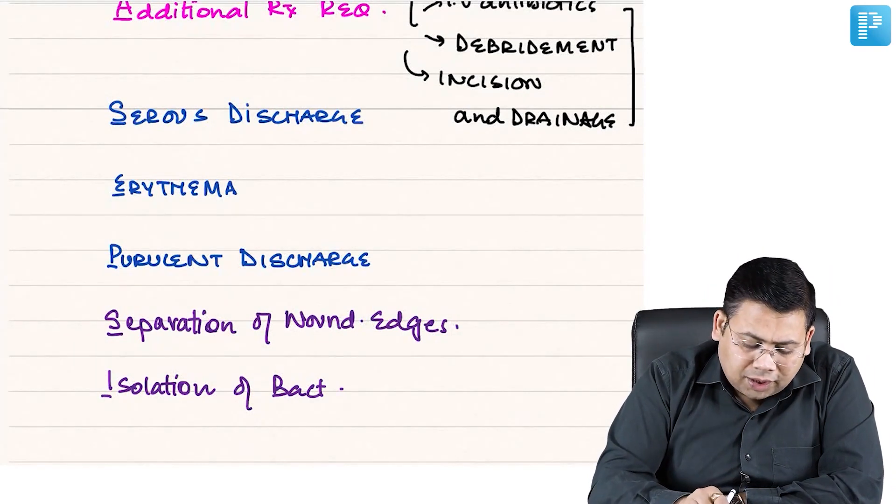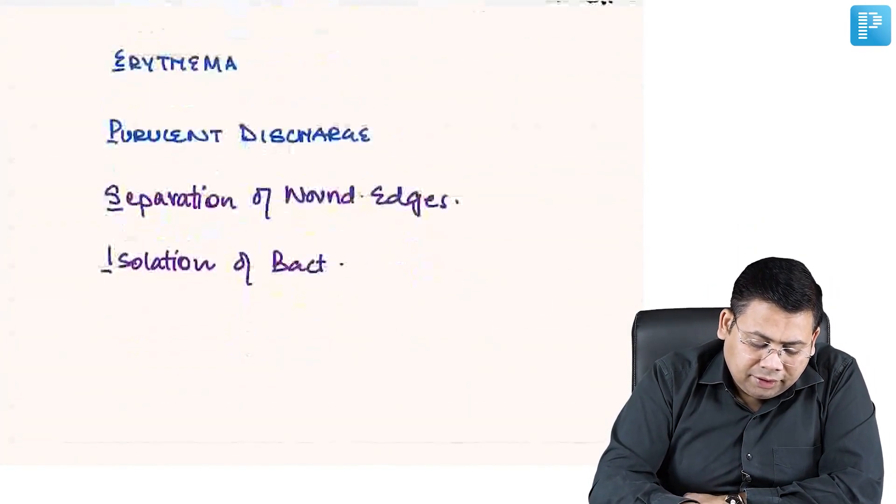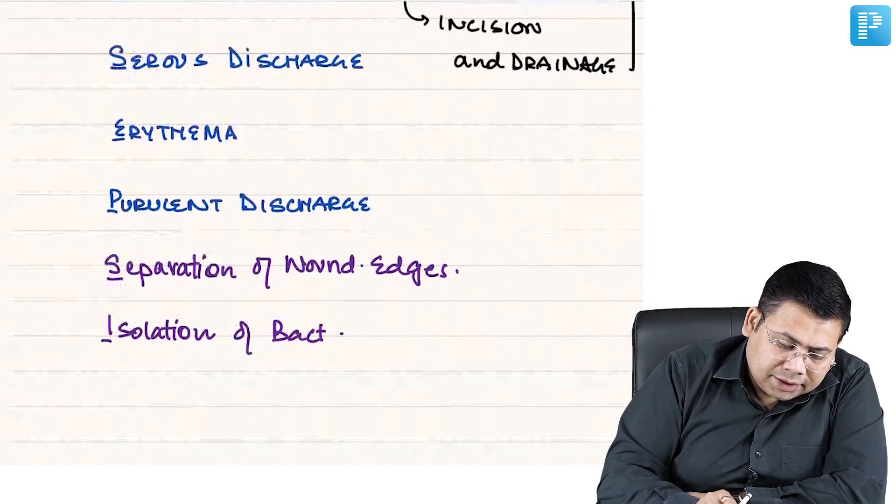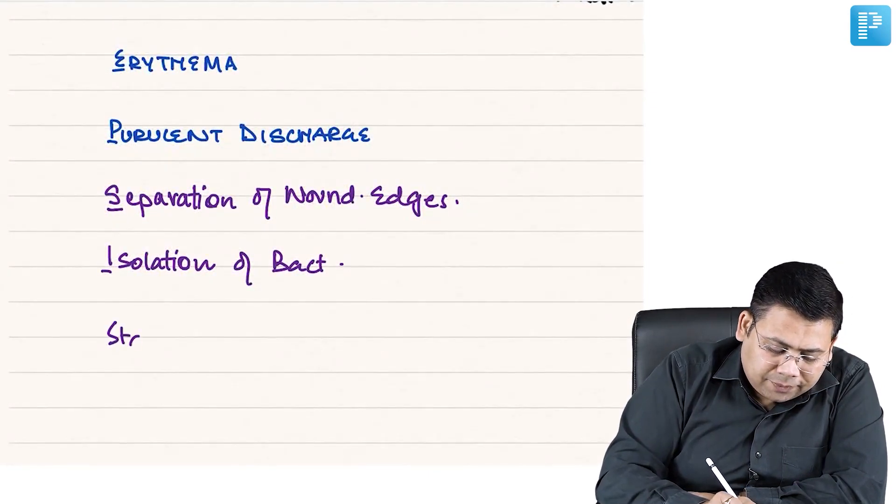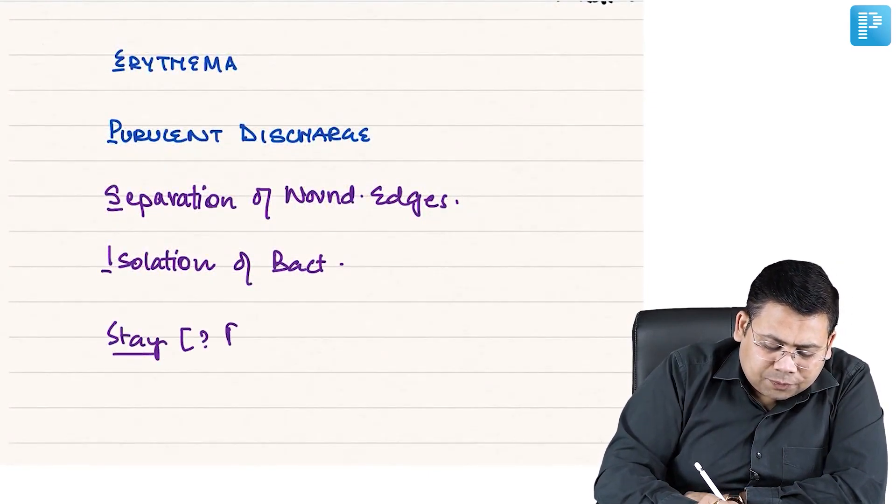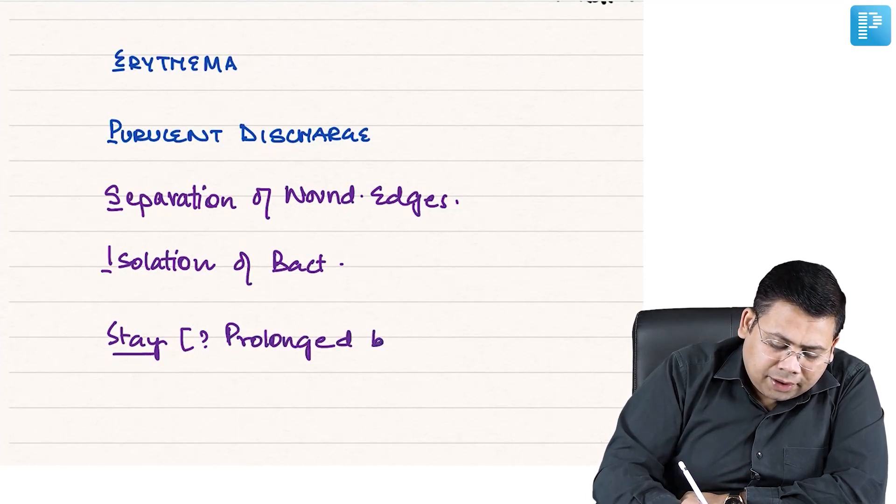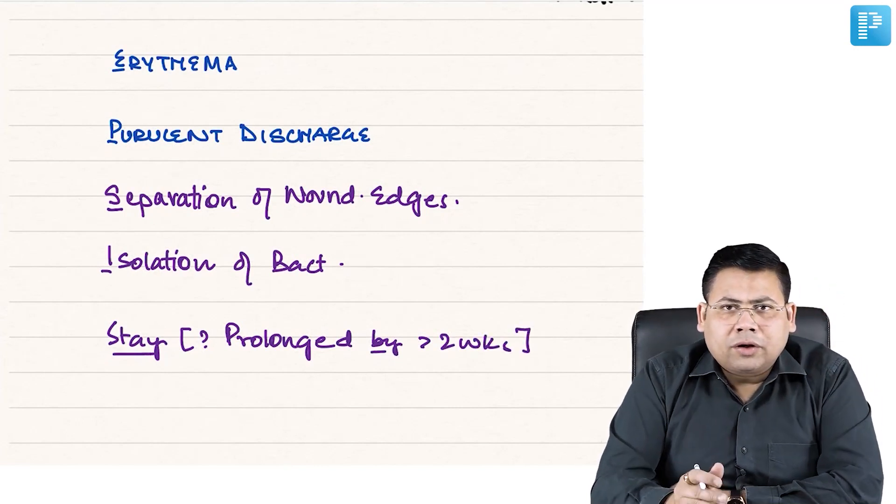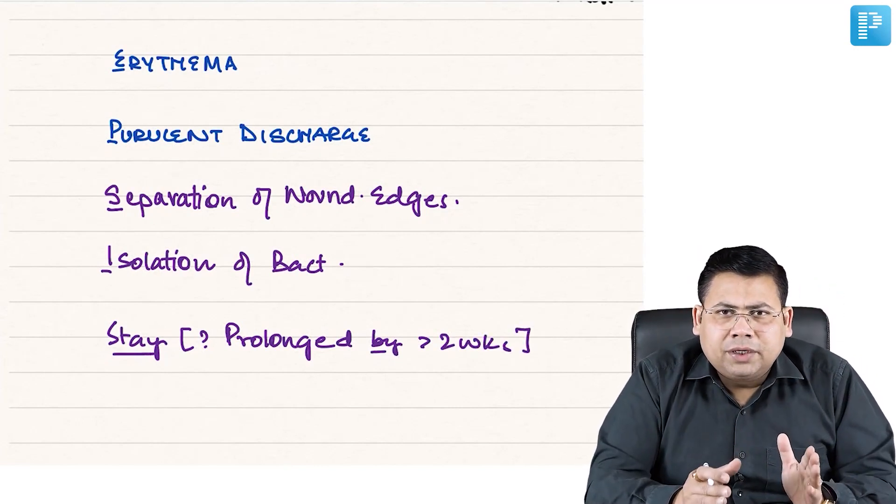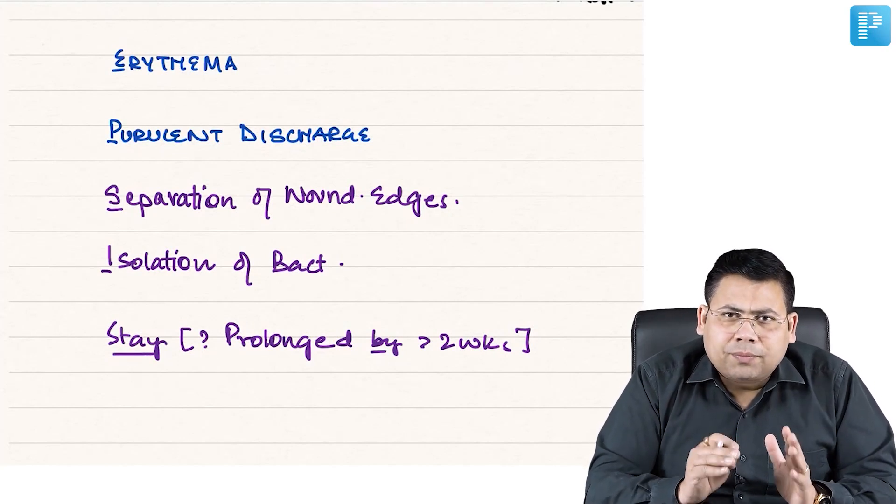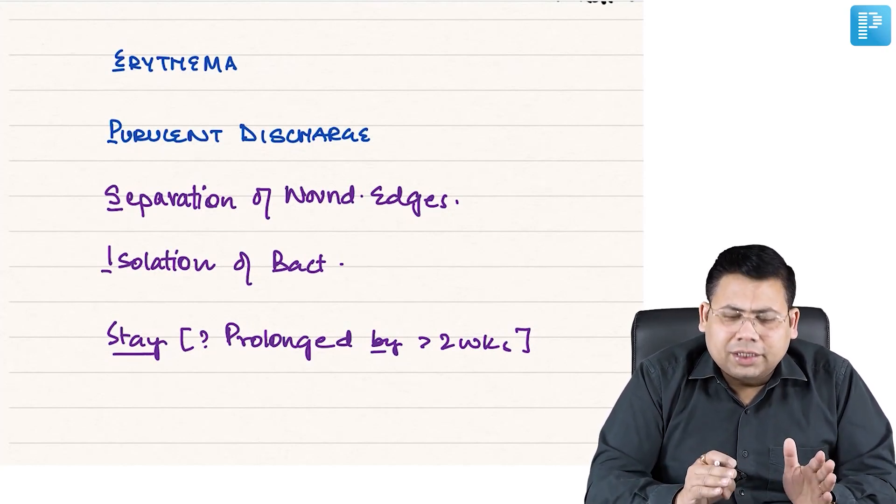Then last S is stay. The stay is prolonged by more than two weeks. So if for conventional management of the patient you had to keep the patient in the hospital for a longer time, this is considered as prolonged hospital stay.